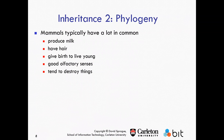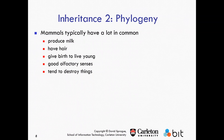We can also look at this in terms of phylogeny — these are all just metaphors. We could talk about mammals: what's special about them? I can make a mammal class. All mammals have some things in common — they produce milk, most have hair, most give birth to live young, most have a good olfactory sense. Most mammals tend to destroy things.